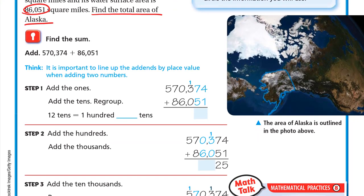Let's find the sum: 570,374 plus 86,051. It is important to line up the addends by place value when adding two numbers. The ones should be under the ones, the tens under the tens, the hundreds under the hundreds, the thousands under the thousands, and so on.